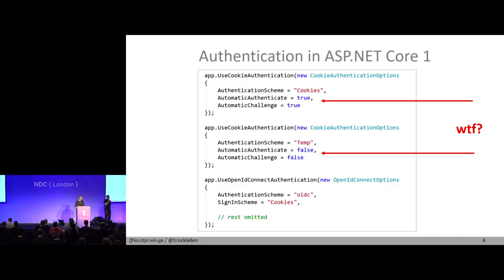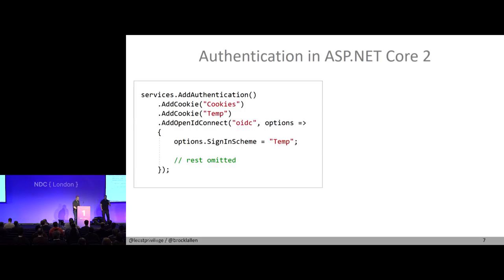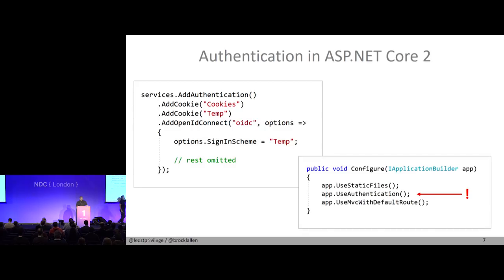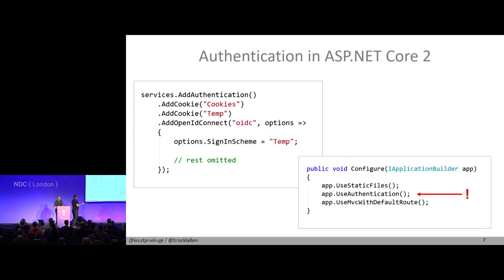We complained about that a lot, and finally between ASP.NET Core 1 and ASP.NET Core 2, they had time to rewrite the thing from scratch. In ASP.NET Core 2, what we now have is support for dependency injection in the authentication system. The idea is you have a so-called handler which takes care of one authentication method. There's a cookie handler, a Windows handler, a Google handler, a Facebook handler, an OpenID Connect handler, and so on. You just throw everything into the DI container that you want to support.